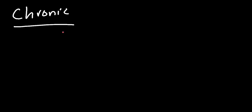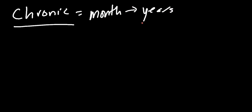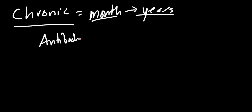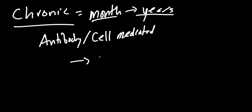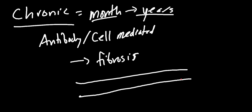The last type of rejection is chronic rejection, which happens months to years down the road. So hyper acute was minutes, acute was weeks to months, and chronic is months to years. The mechanism is again thought to be either antibody-mediated or cell-mediated. What you see is fibrotic tissue — scar tissue, collagen buildup — in the blood vessels. Here's your blood vessel with an endothelial inner layer.